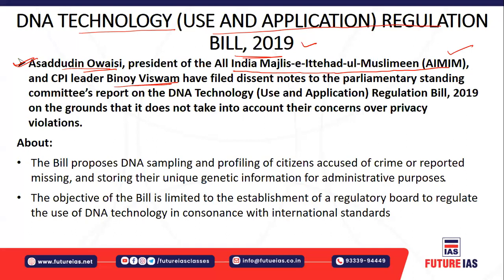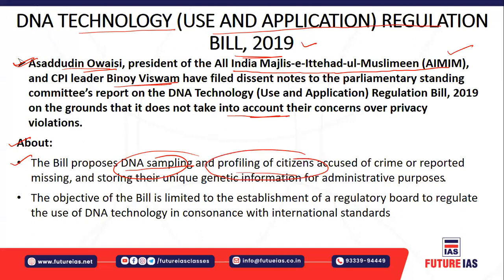Both parties gave dissent notes on the grounds that the bill breaches privacy. According to these leaders, the bill does not have inbuilt features to protect the privacy of individuals, and will ultimately violate privacy. The bill proposes DNA sampling so that profiling of citizens can be done based on certain parameters — for example, if a person is accused of certain crimes like murder or rape.